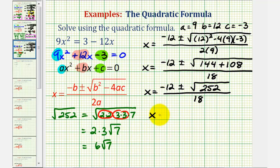Now we have x equals negative 12 plus or minus 6 square root 7, all over 18.